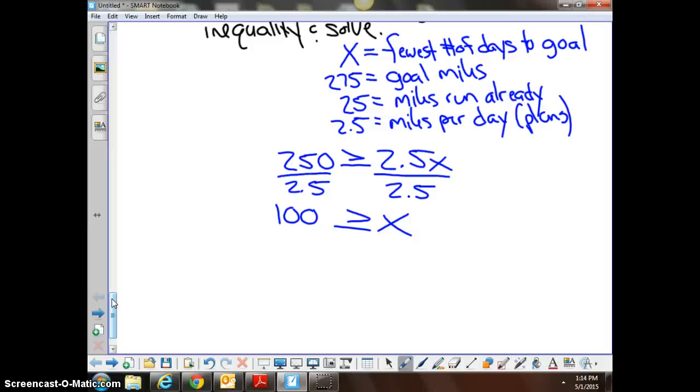Could he do it in less than 100 days if he plans to run 2.5 miles per day? If he plans to run 2.5 miles per day, it would take him 100 days at the minimum, right? So x could be 100, or it could be more than 100, right?